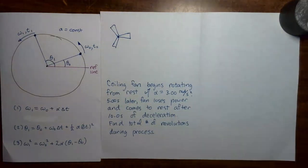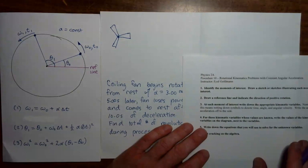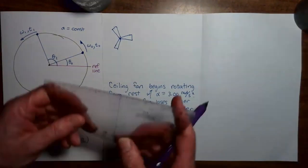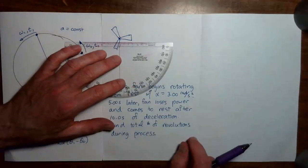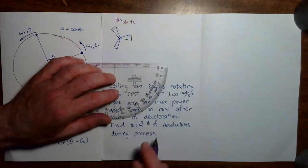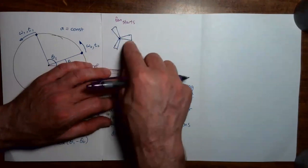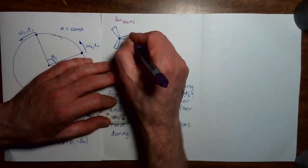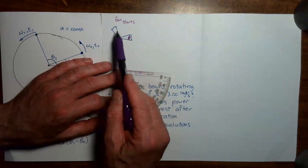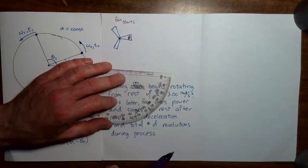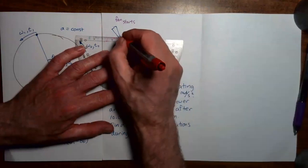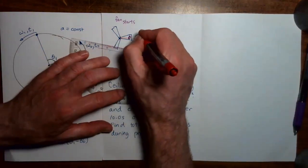Let's go to the handout and see what it tells us. The first step is to identify the moments of interest and then draw sketches illustrating those moments of interest. This first picture represents the first moment of interest — where the fan starts to rotate. To give us a sense of the fan blades rotating, I'm going to draw a little insect that always stays on the same fan blade. We'll start the insect off at the position of the reference line.